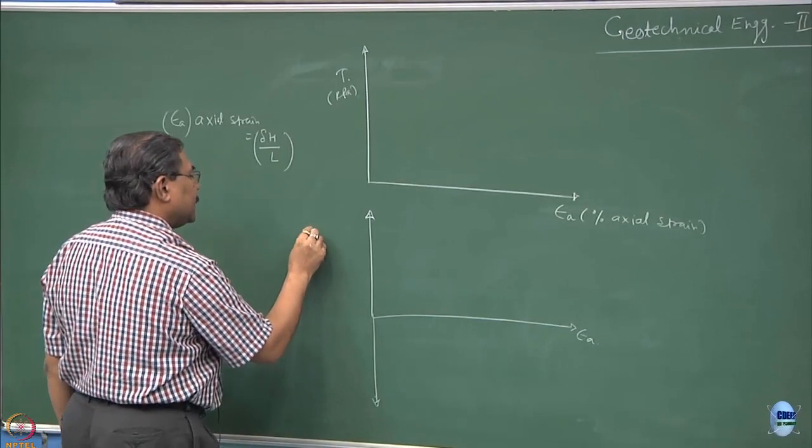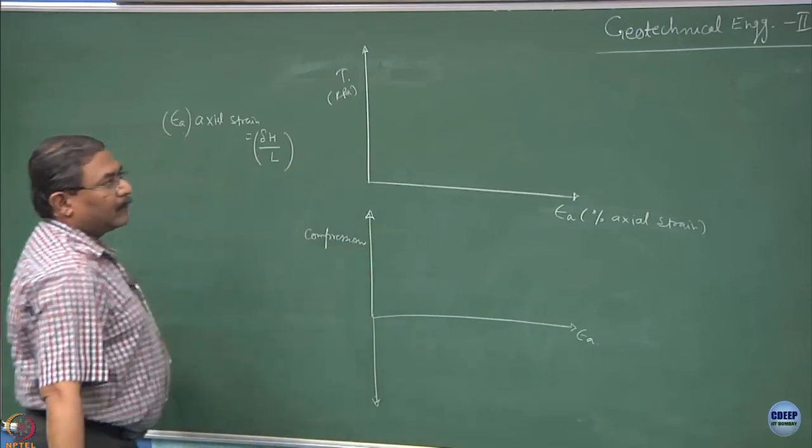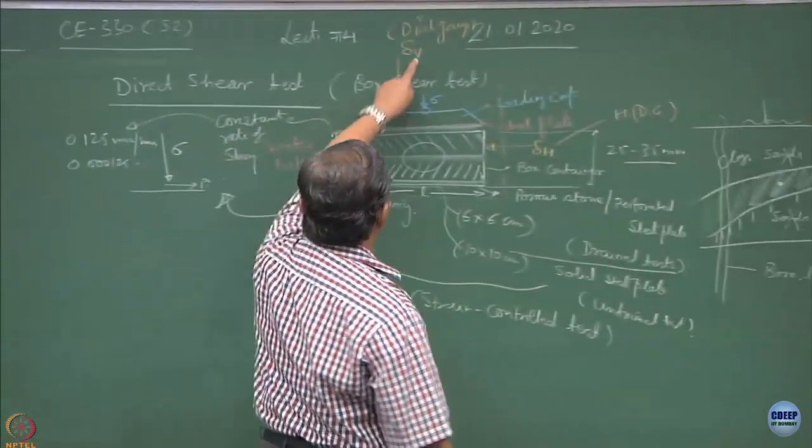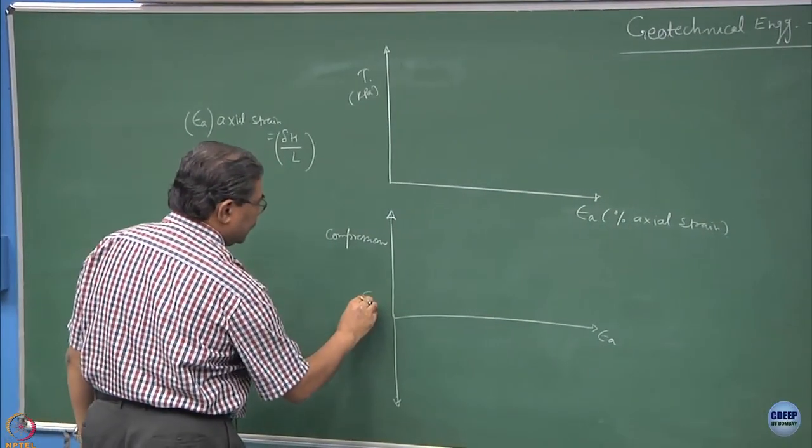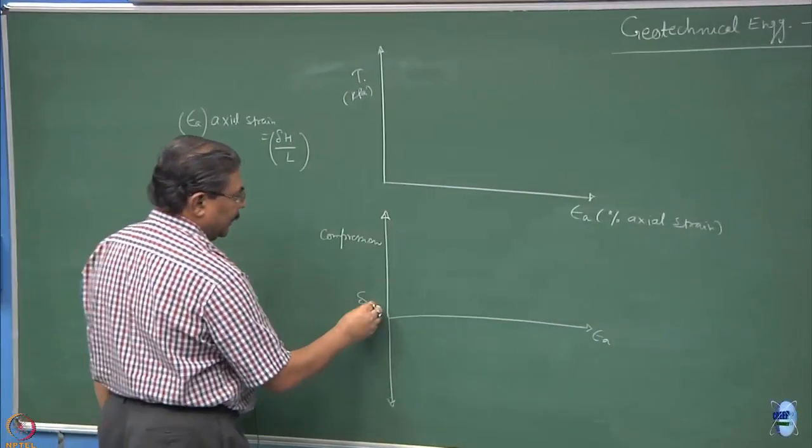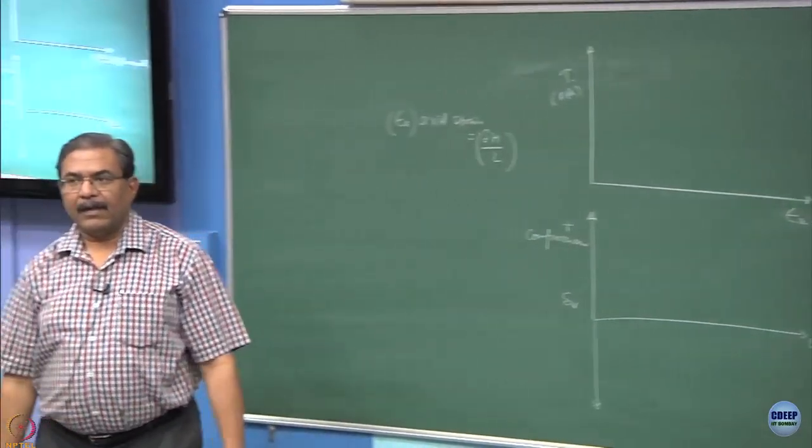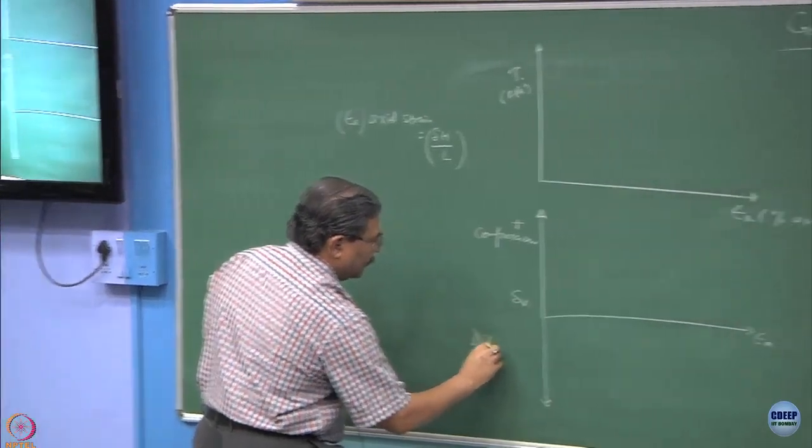If I say that this is compression which I am getting from delta V. So this is a delta V axis. If delta V is positive, it is compression. However, if delta V is negative, this is what is known as dilation.